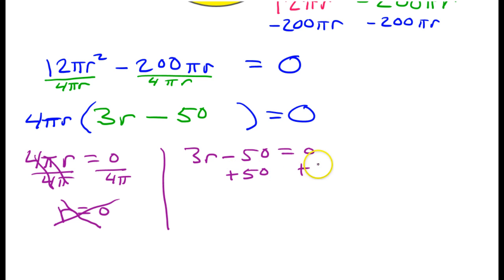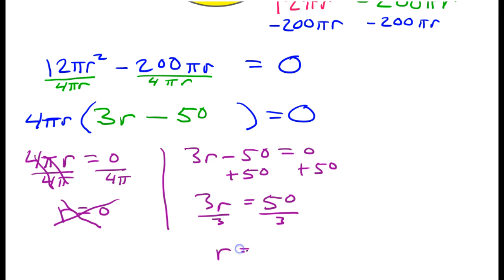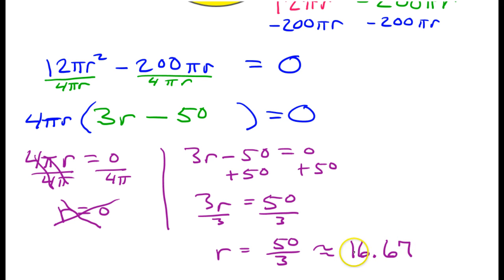To solve 3r − 50 = 0, I add 50 to both sides to get 3r = 50, then divide both sides by 3. That gives r = 50/3, which is approximately 16.67 — or 16.6 repeating. And there you go, that's the radius of this circle.